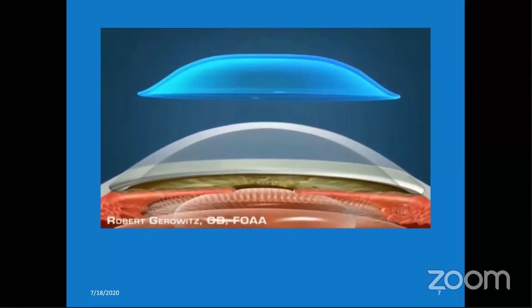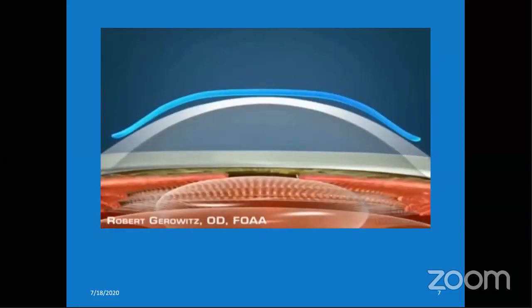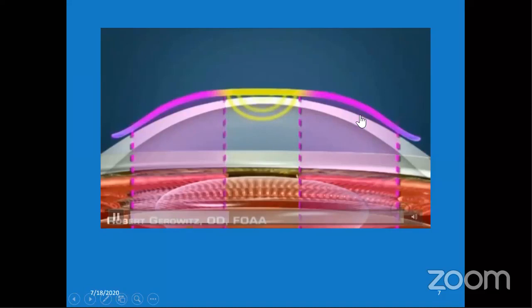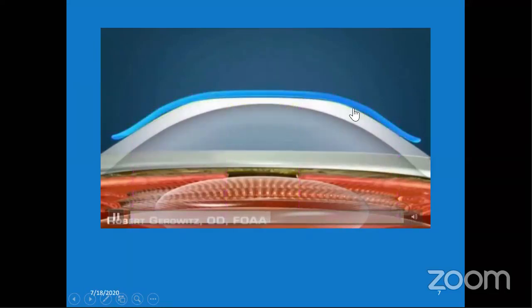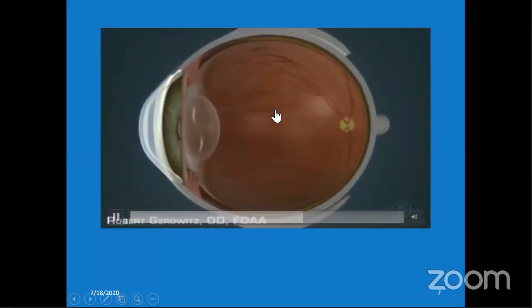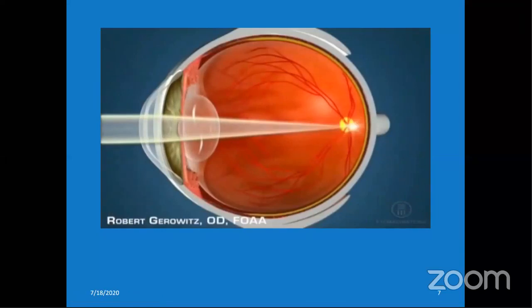When ortho-K is placed on the cornea, the center of the lens creates a positive push force and negative pull force in the mid-periphery. The epithelial cells in the center get compressed, causing the central cornea to become flat, while the mid-peripheral cornea becomes steep.